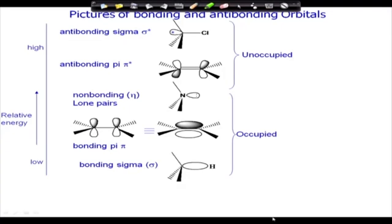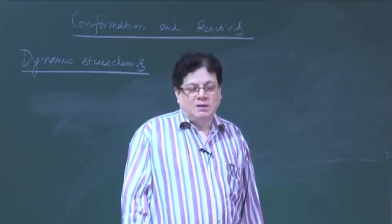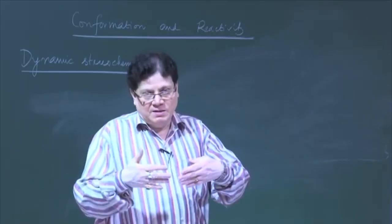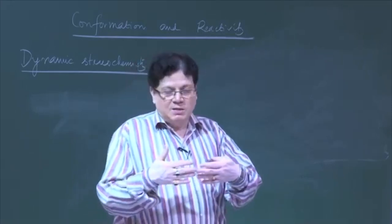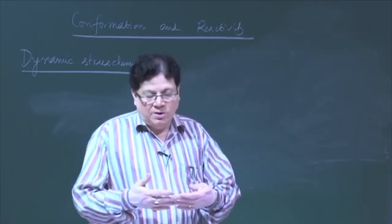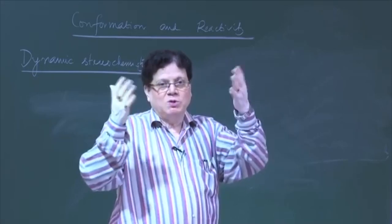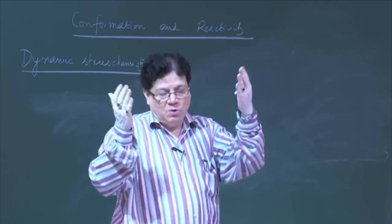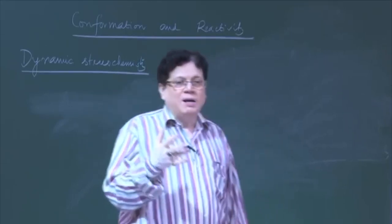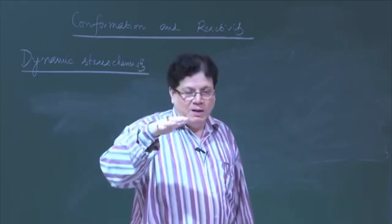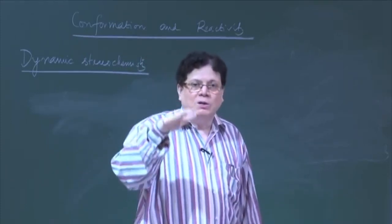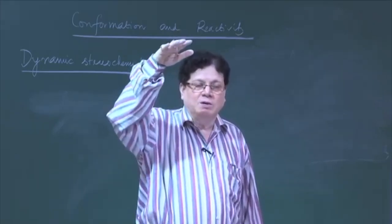Let us look at these slides. When two orbitals combine with each other, that generates two molecular orbitals. One is the bonding scenario when the two orbitals are in phase — the energy goes down and the system is stabilized. The other is when the orbitals are in opposite phase — they are mismatched, the energy goes up, there is practically no overlap because they repel each other. That is called an anti-bonding scenario. Whenever two atomic orbitals interact, one will be bonding and the other anti-bonding.